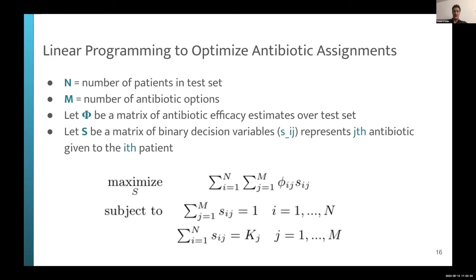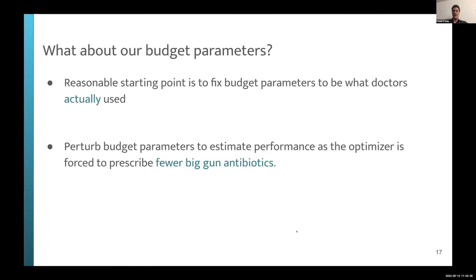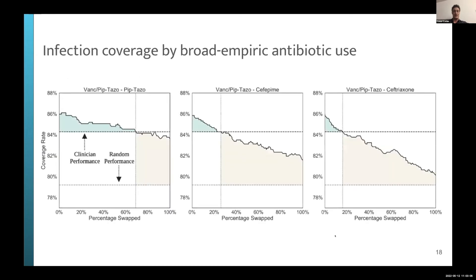We can perturb the budget parameters to estimate optimizer performance as it's forced to use fewer broad-spectrum drugs in favor of more narrow-spectrum drugs. On the y-axis is coverage rate — the fraction of patients covered by the antibiotic given to them. The first dashed black line is clinician performance, the gray dashed line is random performance, and the solid line is the optimized solution. At top left, the budget matches clinician usage; moving right shows performance as broader drugs are constrained.